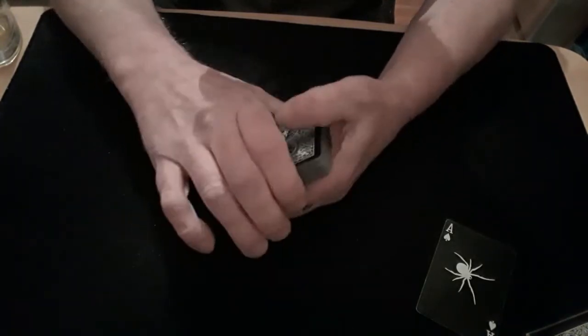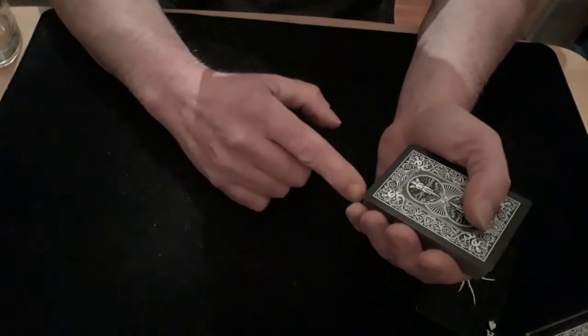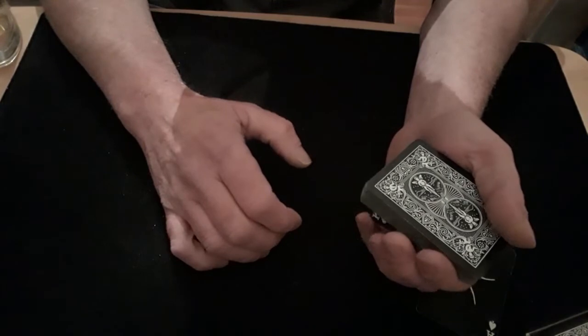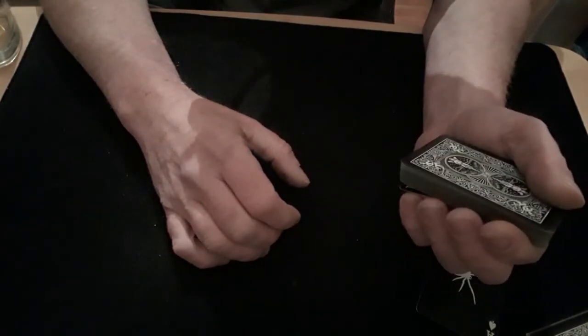Once you've got it facing up on the bottom, you're just going to bend down on the bottom right hand corner and put a bend in it so you have created a crimp.